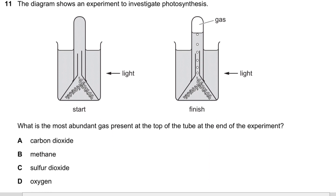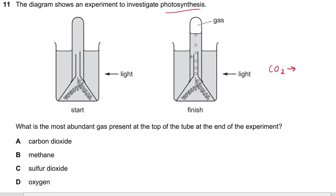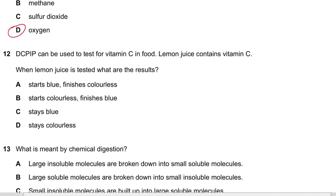Question 11: The diagram shows an experiment to investigate photosynthesis. What is the most abundant gas at the top of the tube at the end of the experiment? Photosynthesis takes in carbon dioxide and produces oxygen, so oxygen will be the gas formed. Answer is D.